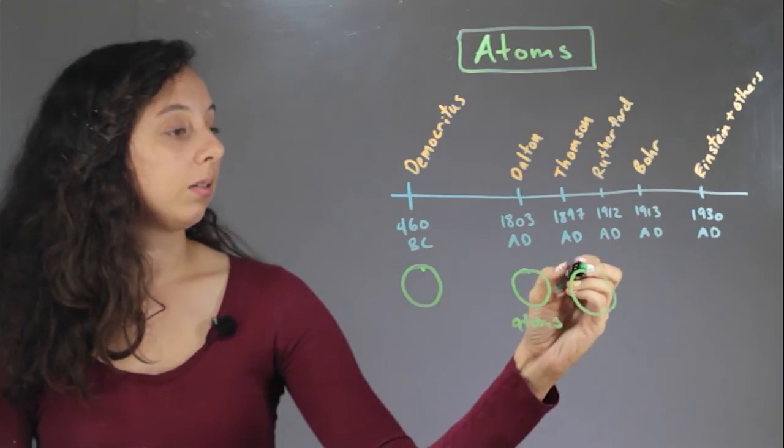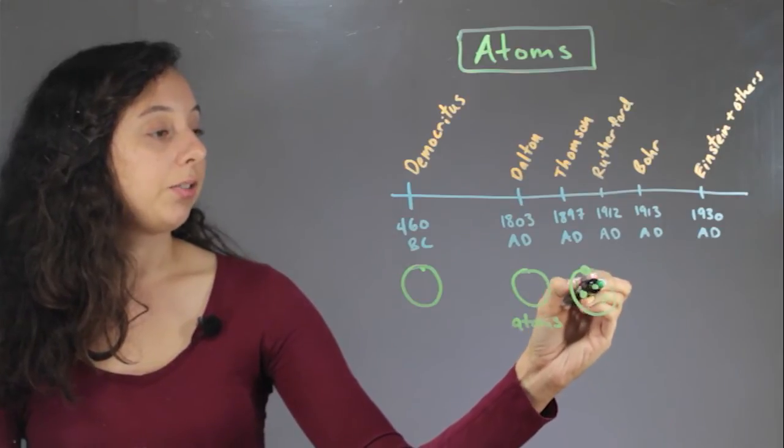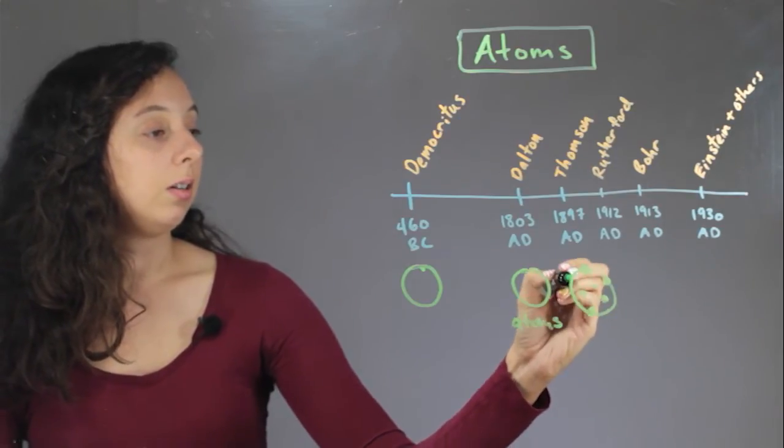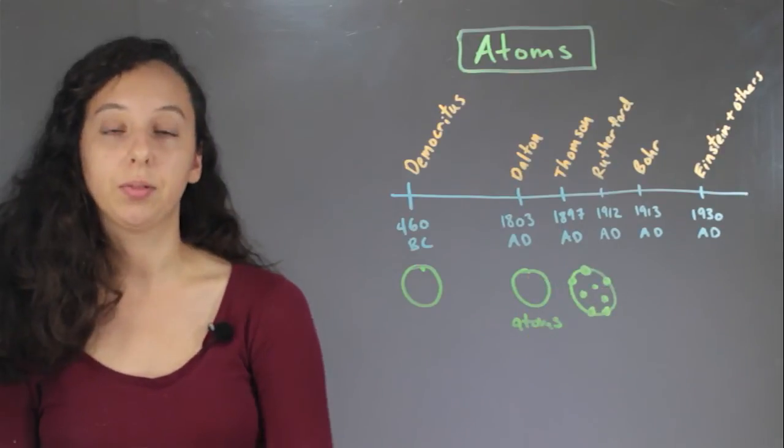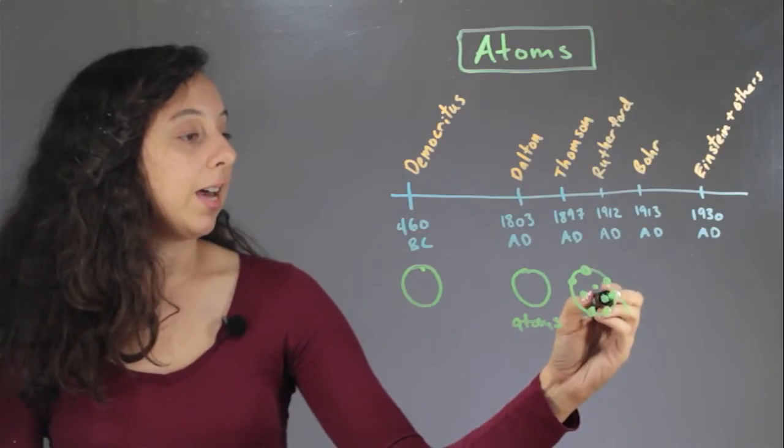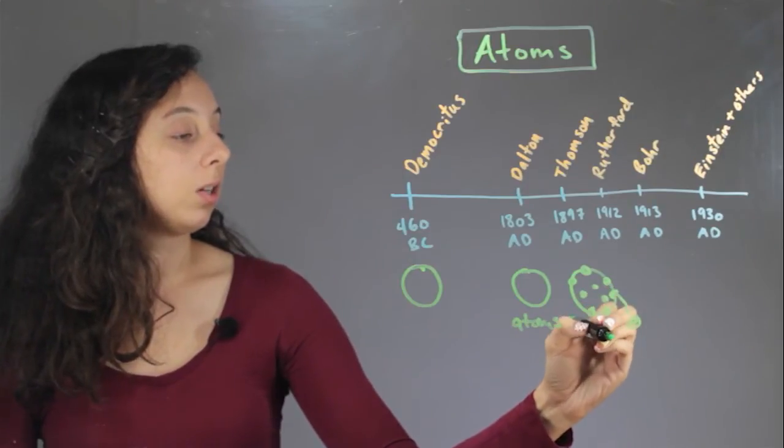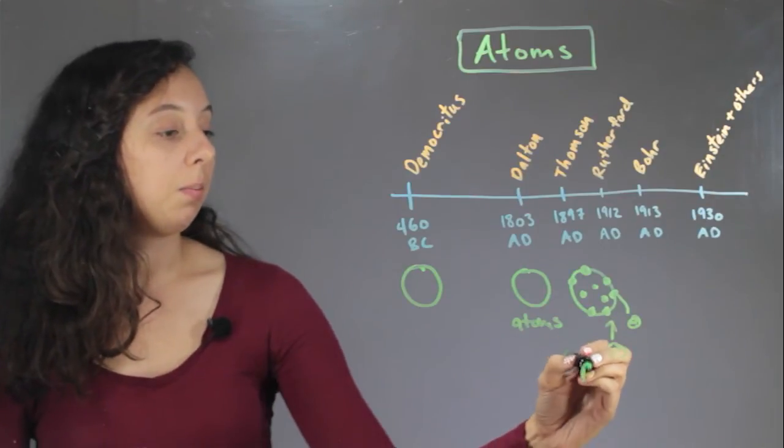And so he basically discovered electrons, and he thought that they were just kind of stuck in the middle of some stuff, like if you put marbles and clay or something, that's what he thought electrons were. So he thought everything else, like this, was positive, and then the actual electrons were negative. And so this always gets called the plum pudding model.